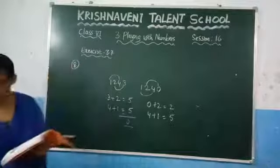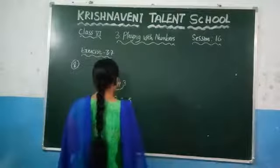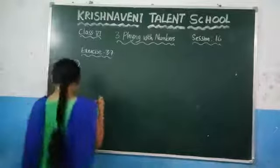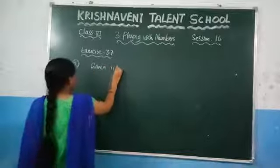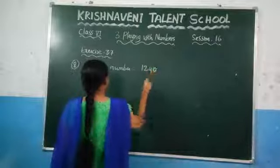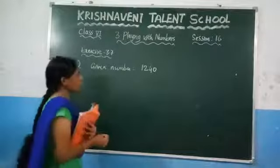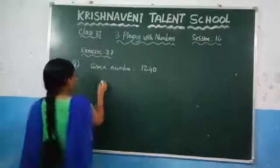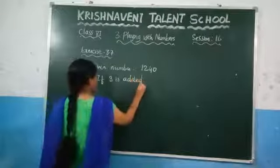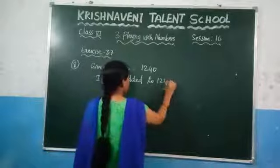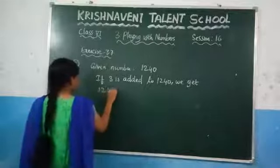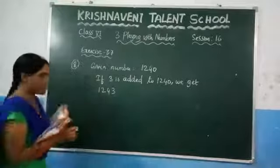Write the solution to this problem. The given number is 1240. If 3 is added to it, we get 1243.